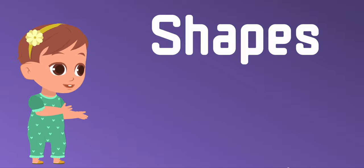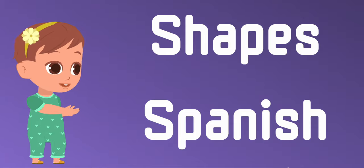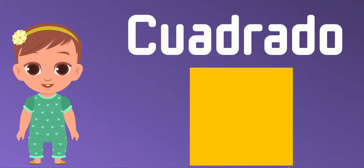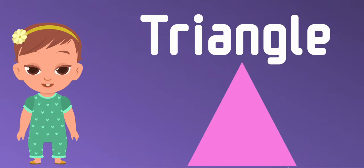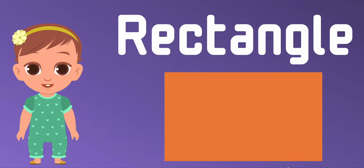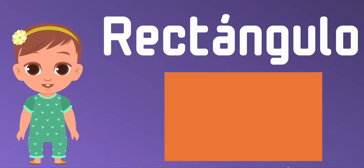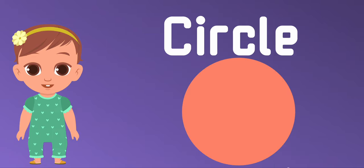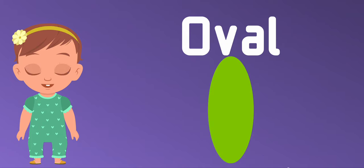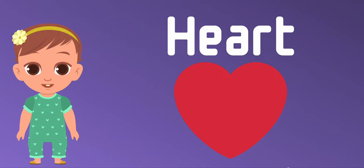Let's learn some shape names today in Spanish. Square: cuadrado. Triangle: triángulo. Rectangle: rectángulo. Circle: círculo. Oval: óvalo. Heart: corazón.